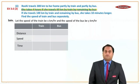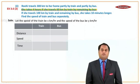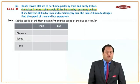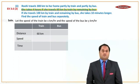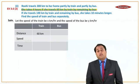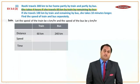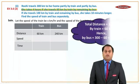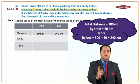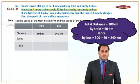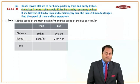The sum is about distance, speed and time. She takes 4 hours if she travels 60 kilometers by train and the remaining by bus. So train distance is 60 kilometers. Remaining by bus means total is 300, out of which 60 is by train, so remaining 240 by bus. Speed of train is X and speed of bus is Y.